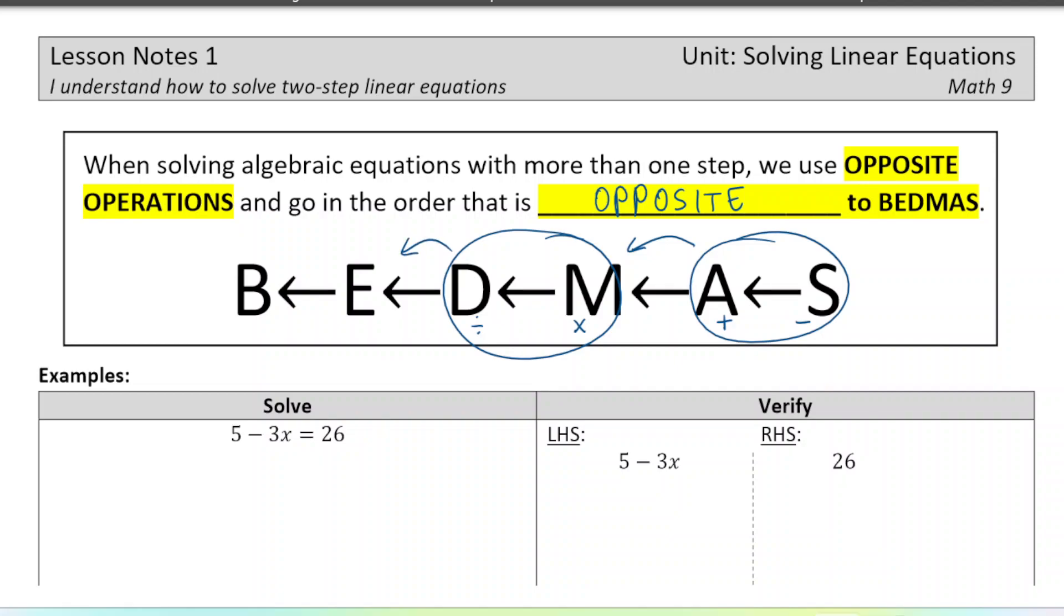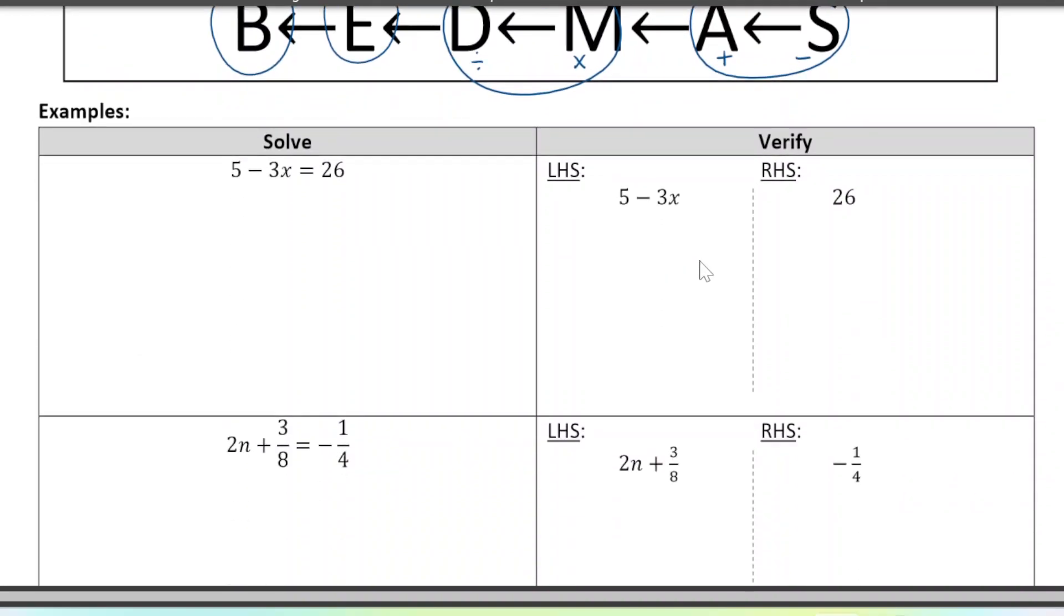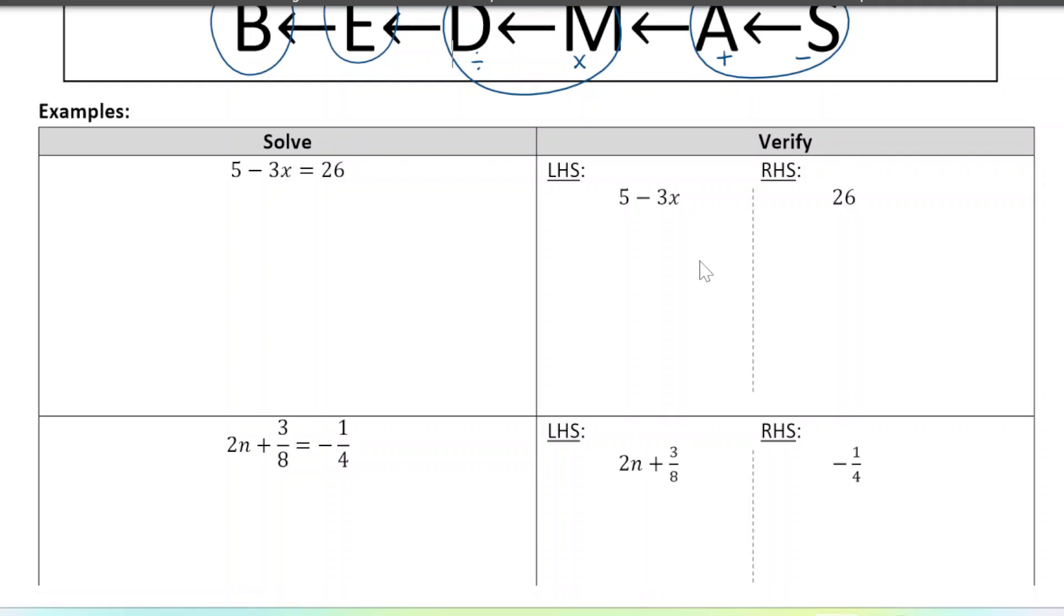Then we move to exponents, which we won't see today, and then finally to brackets or grouping, which again we won't see today. All of these are two steps, but there is going to be a little trick to do with the fractions. So here we see two columns. On the left side we're going to solve, that means find out what the variable is equal to. By the variable I mean the letter in most cases. And then verify that our answer is correct, so just double-check our work.